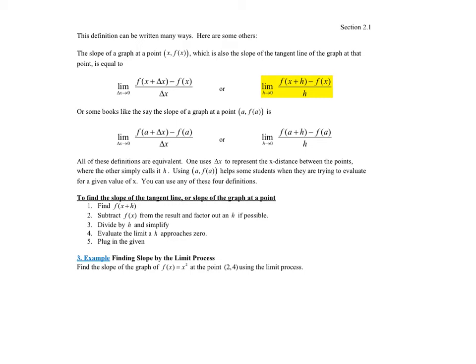We have it written right here — I went ahead and wrote both the book version and my own version of it. I am not the one that came up with this; other books use H instead of Delta X — that's actually how I learned it. But I highlighted the one I'm going to be using: the limit as H approaches 0 of f(x+h) minus f(x), all over H. The only difference between the first two formulas and the next two is the first two are in general for any X, and the second two are at a specific point if you plug in the X value.